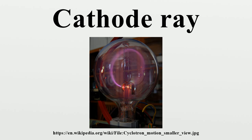Cathode rays are invisible, but their presence was first detected in early vacuum tubes when they struck the glass wall of the tube, exciting the atoms of the glass and causing them to emit light — a glow called fluorescence. Researchers noticed that objects placed in the tube in front of the cathode could cast a shadow on the glowing wall, and realized that something must be traveling in straight lines from the cathode. After the electrons reach the anode, they travel through the anode wire to the power supply and back to the cathode.